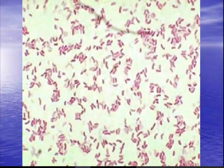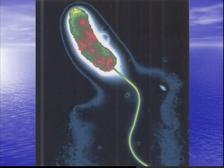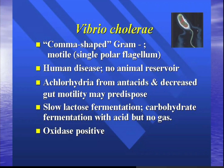Vibrio cholerae is comma-shaped with a flagellum for motility. The other curve-shaped bacteria are all the Vibrios, the Campylobacters, and the Helicobacters — those are the three curved gram-negative rods.